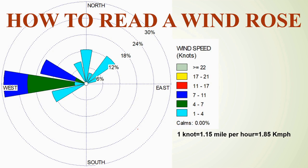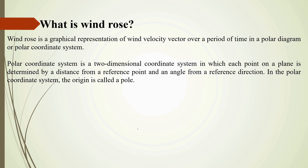Today we will learn how to read a wind rose. First, we have to know what a wind rose is. A wind rose is a graphical representation of wind velocity vectors over a period of time, shown in a polar diagram or polar coordinate system.